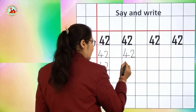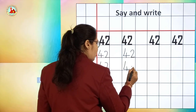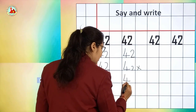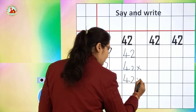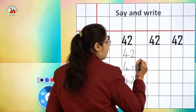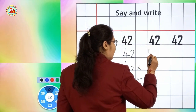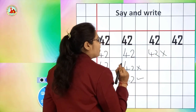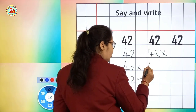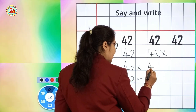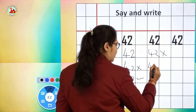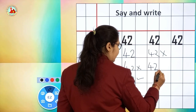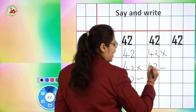Children, if you write one number big and another number small, then also I will put wrong. Both numbers should be of equal size. This is the right way to write number 42. If you write 4 like this and 2 like this, then also I will put wrong — this is not the correct way to write the number. You have to do proper slanting line, sleeping line, standing line, then write number 2. Make a proper curve, go in a slanting way, then sleeping line. This is the right way to write number 2.